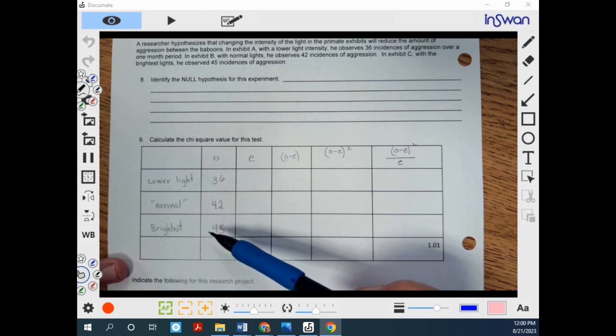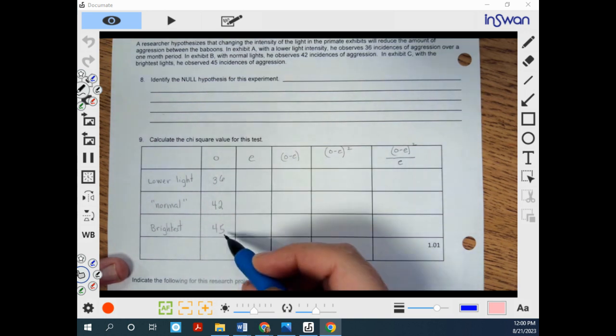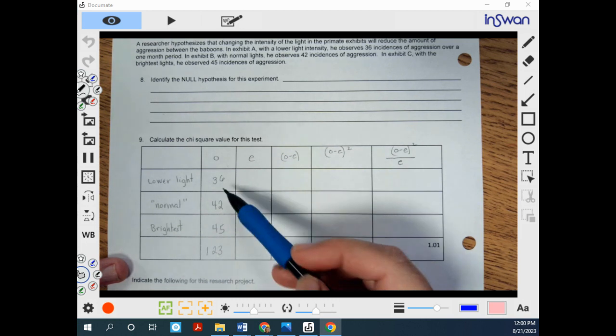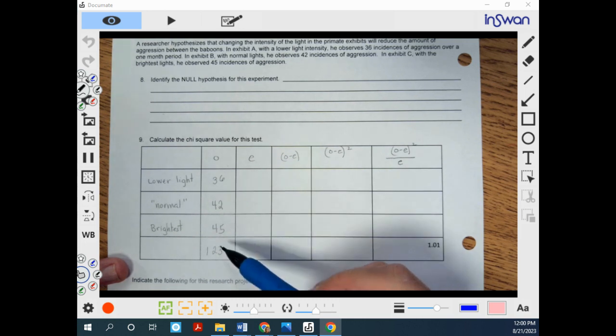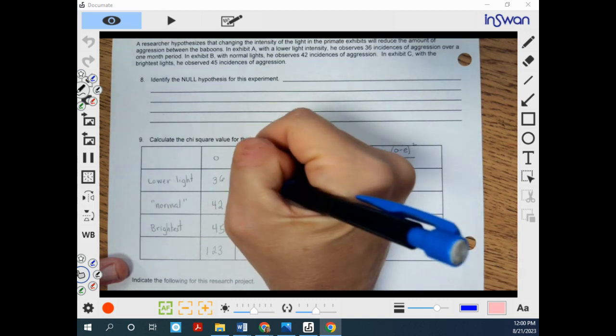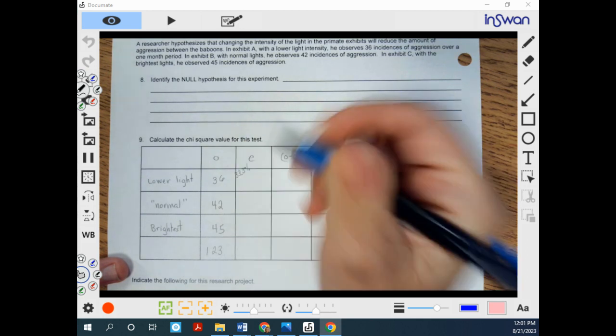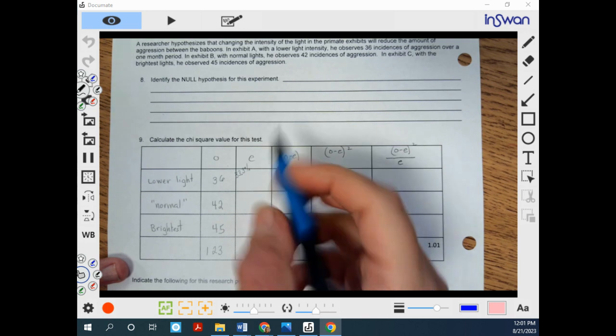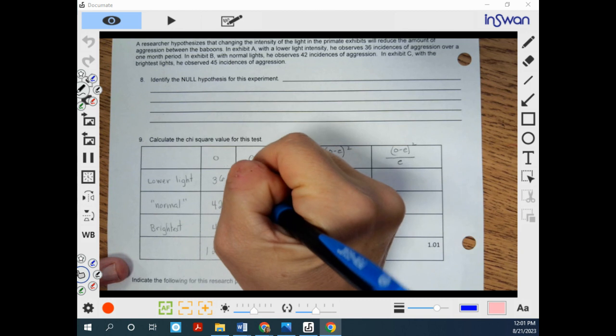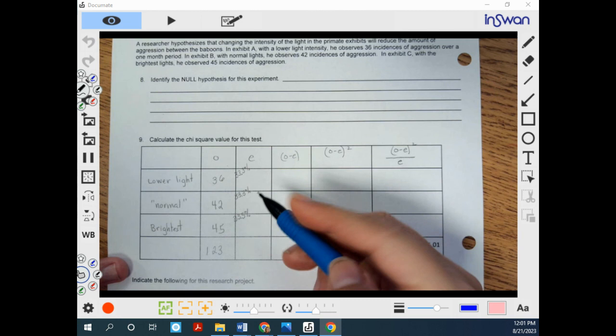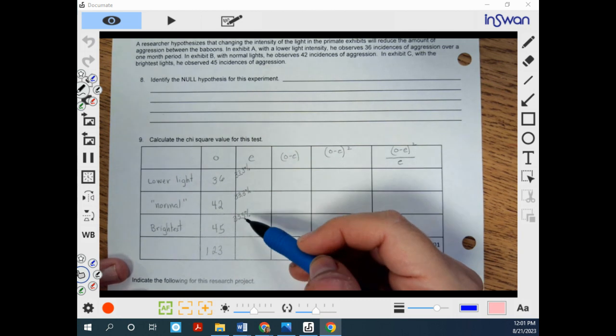There's three different exhibits. Think about total. We ended up with 123 different incidents. And if the light's not affecting them, we would expect that we would see 33.3% of these incidences happen in exhibit A. Same with this one. It would be all even if light was having no effect on aggression. So that's where this 33.3% is coming from.